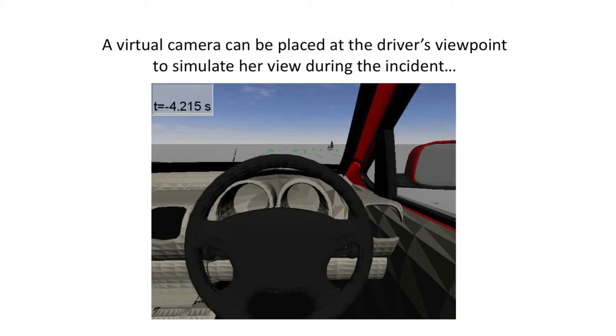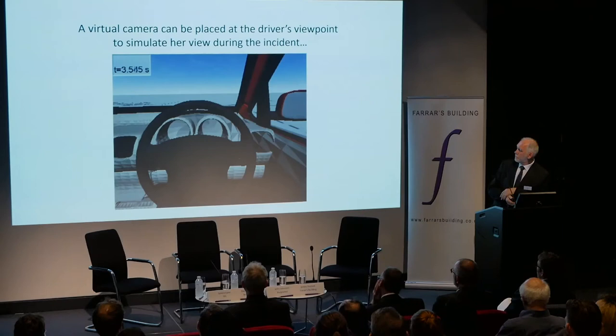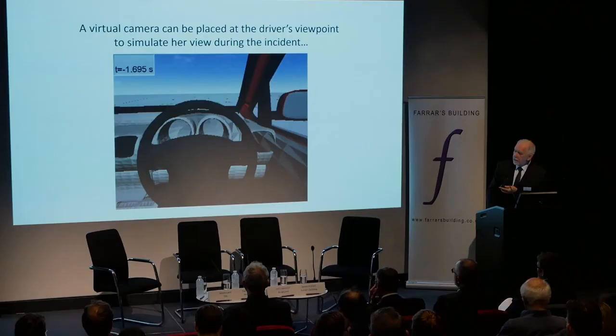Because the model exists within three dimensions, it's possible to place a virtual camera within the vehicle showing the driver's potential viewpoint. This is a simulation of what her view might have been as she approached the junction. From this virtual position, the pedestrian and her trolley could have been completely hidden by the offside A pillar.